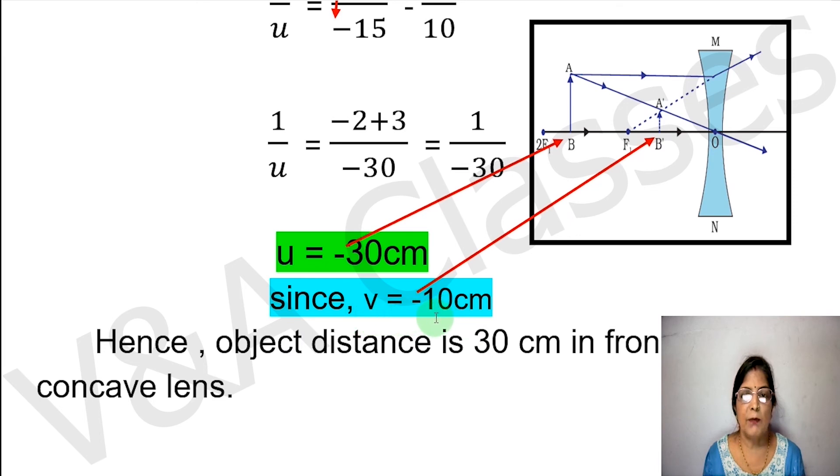The image distance value is minus 10 cm and object distance value is minus 30 cm, which tells us that the object length is 3 times the image, and our ray diagram will be this way.